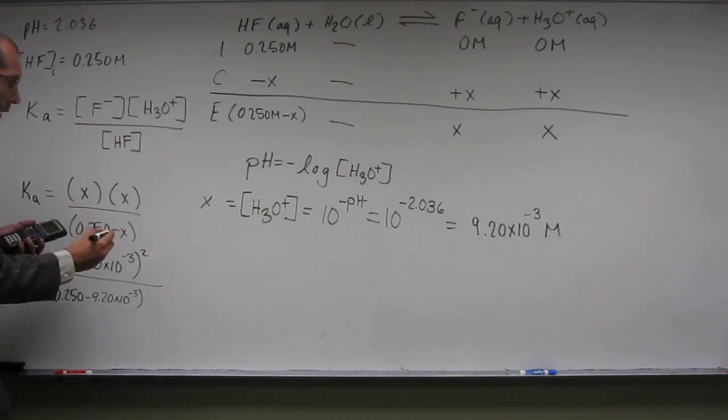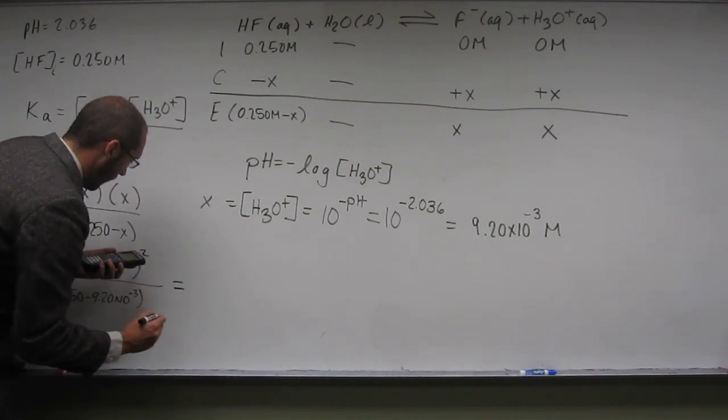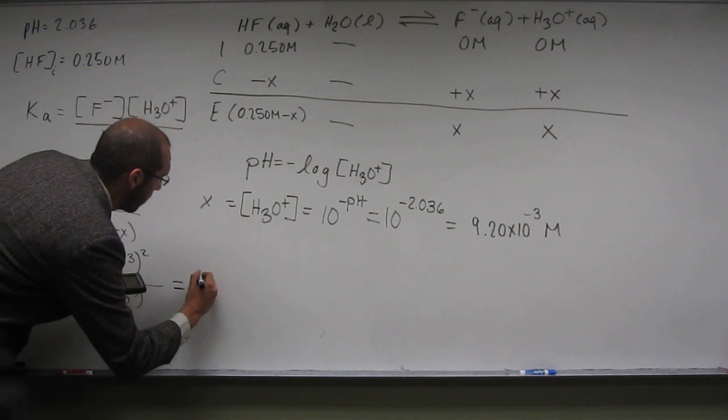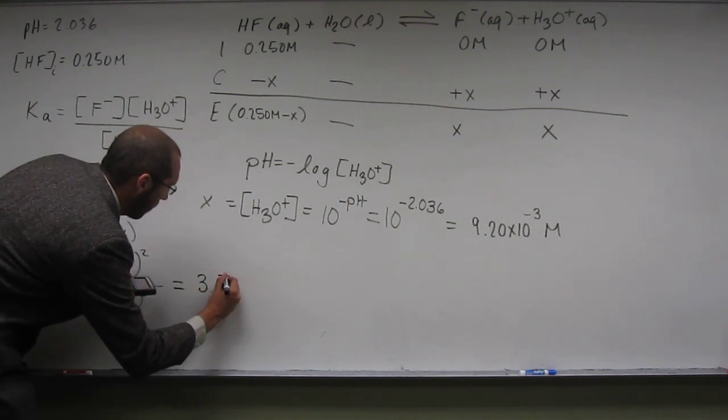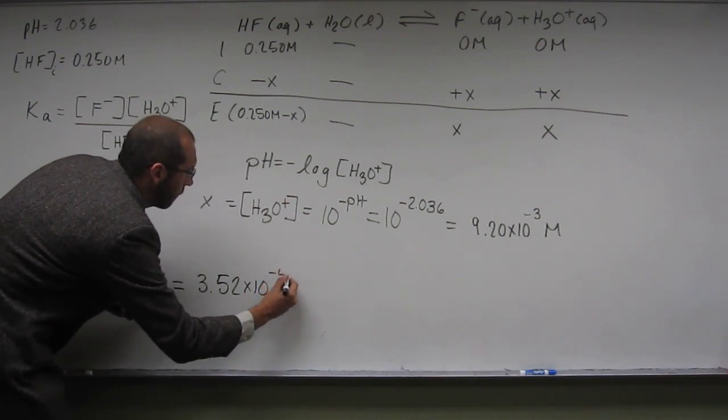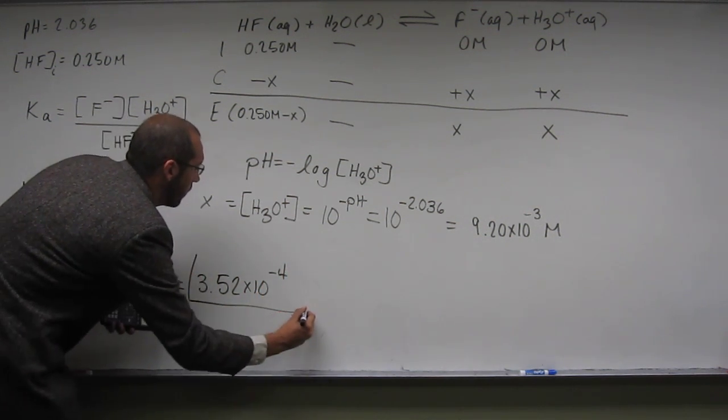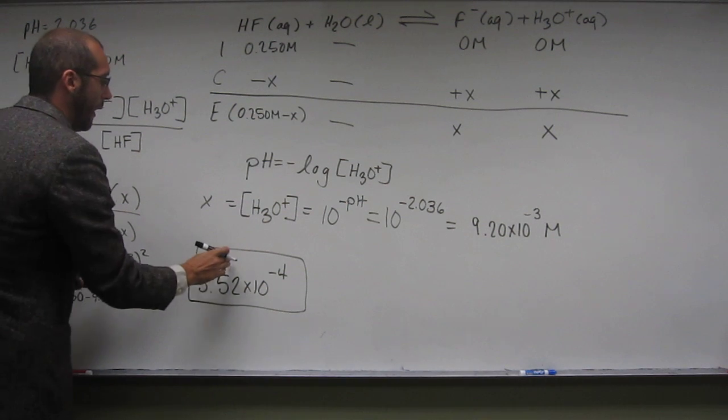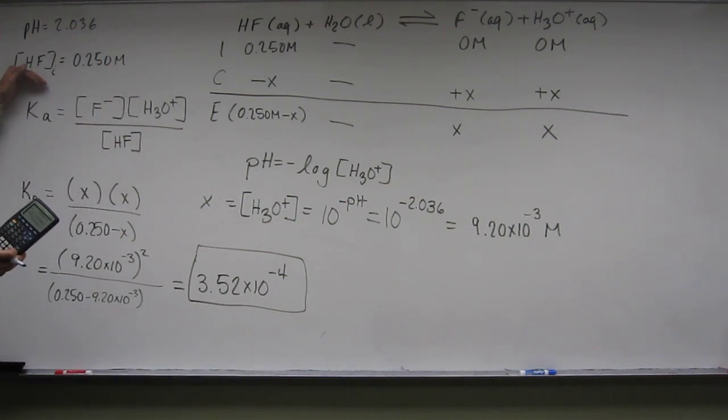OK. So when we do that, we get the Ka. And it's going to be 3.52 times 10 to the negative 4, no units.